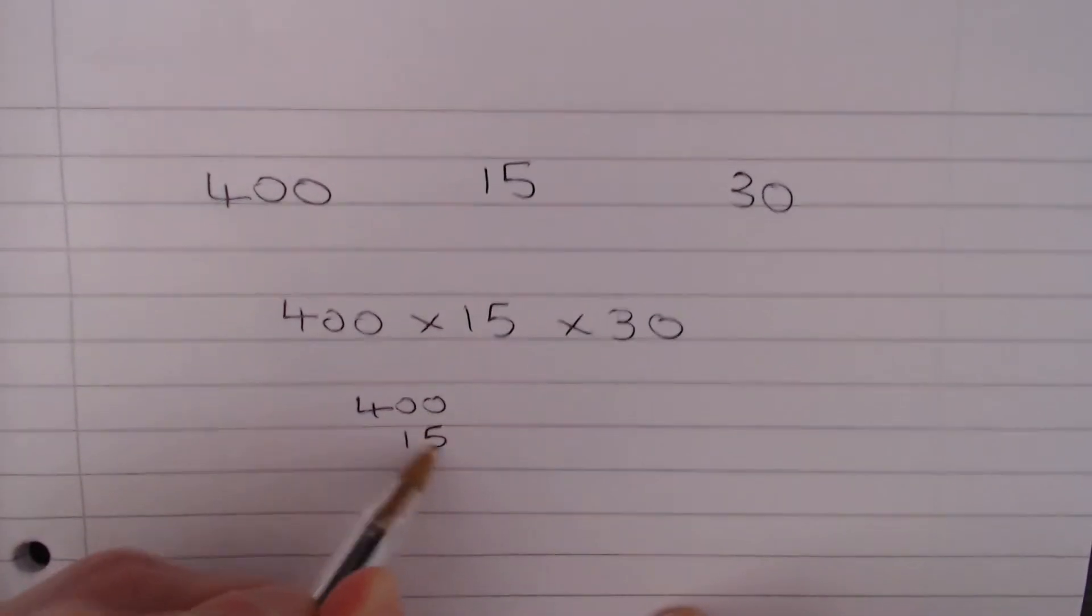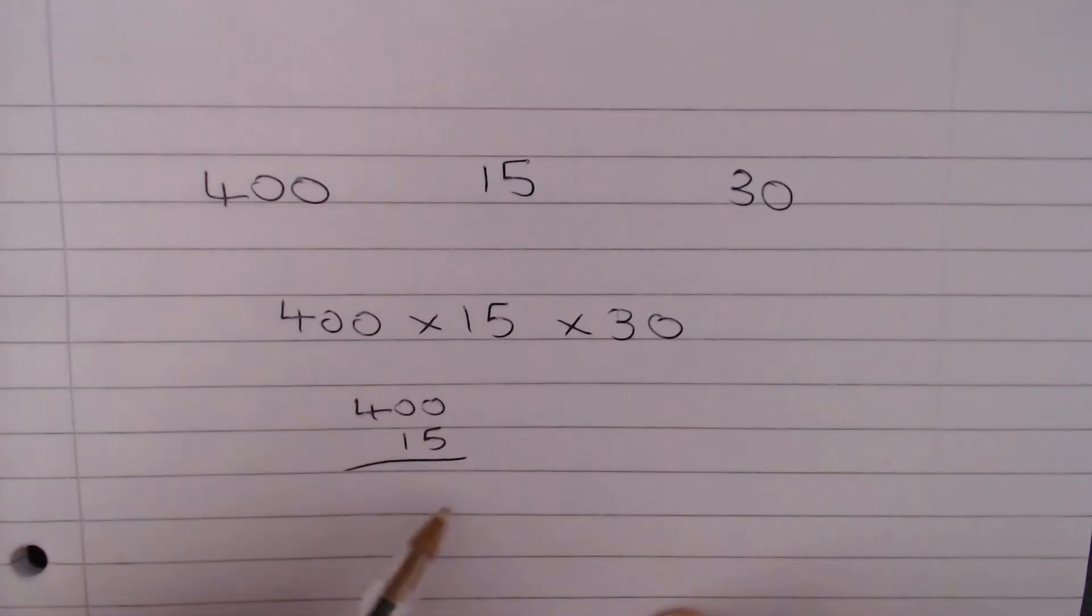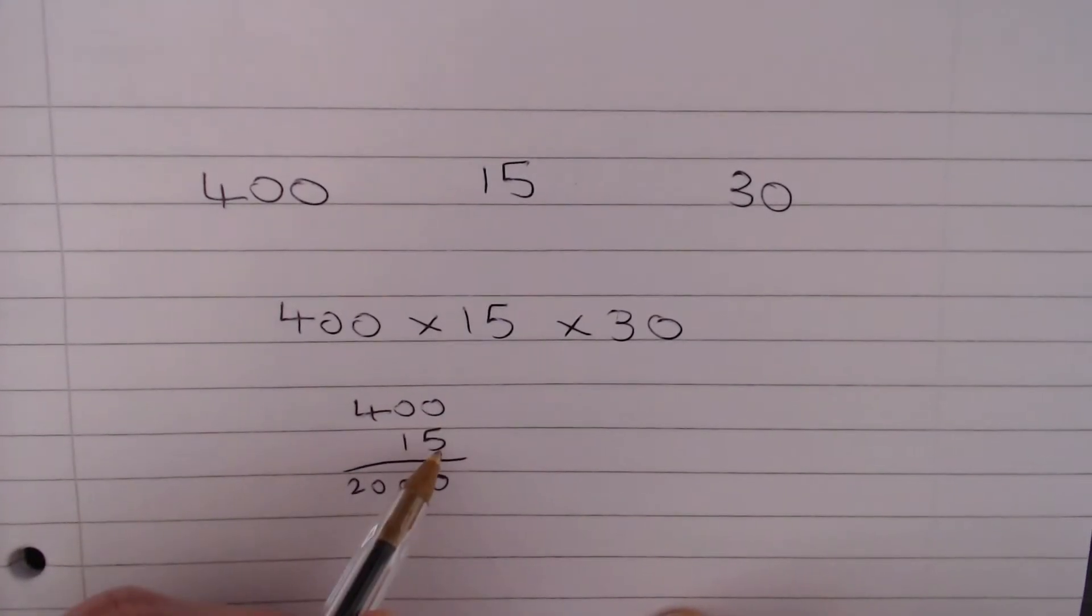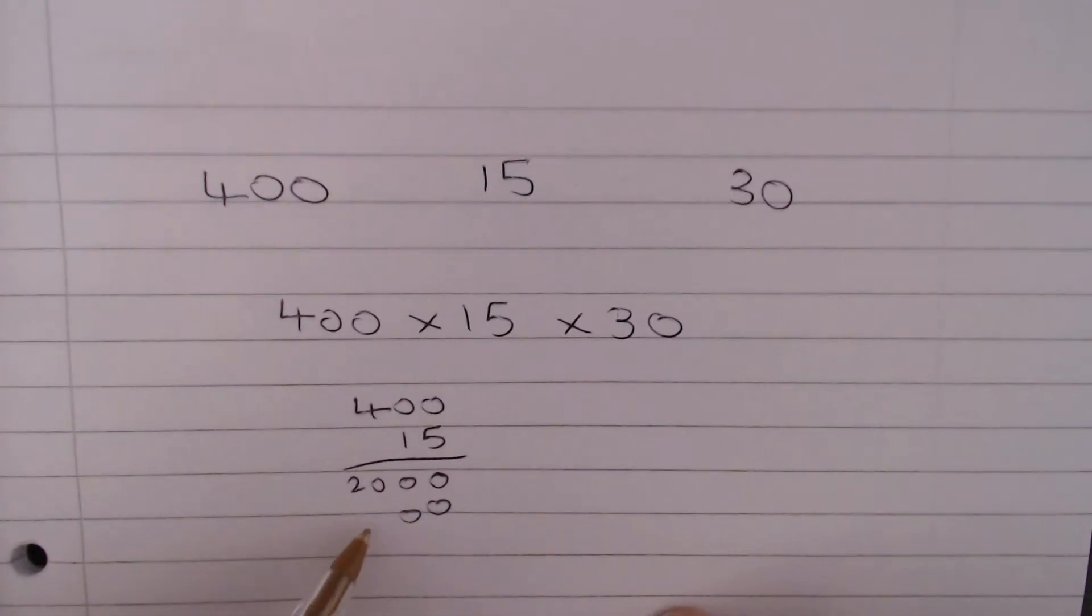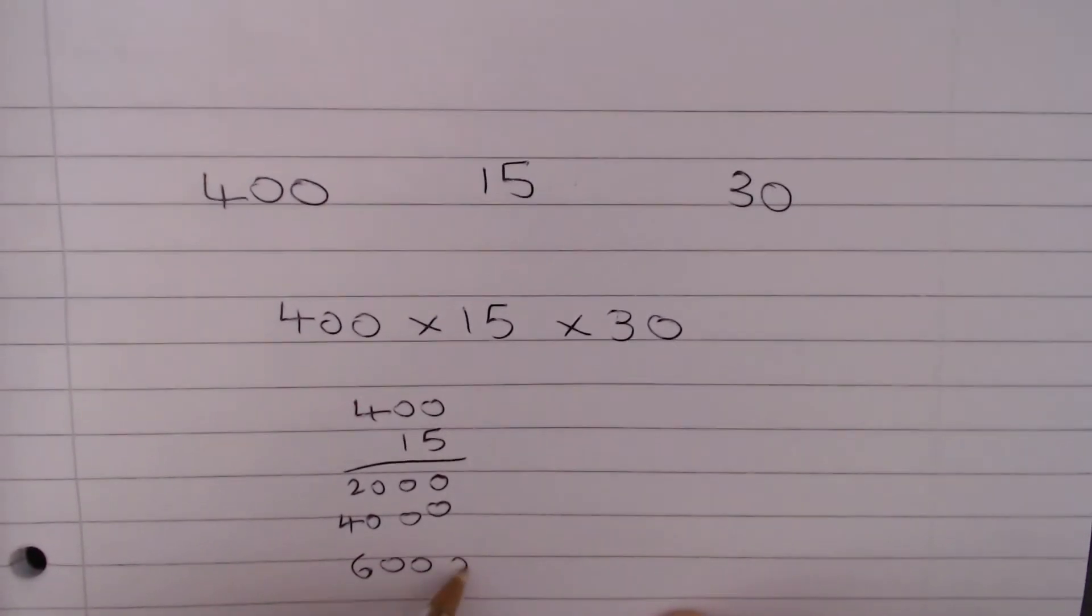So if we do 400 by 15 first, we would get 5 times 4 is 20, with two zeros. We would get 1 times 4 is 4, with 1, 2, 3 zeros, so that's 1, 2, 3, and then 4. And we add those two together, so we get 6,000.